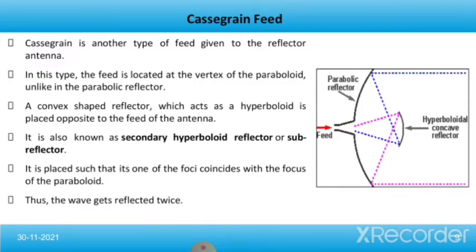Along with this, we have another type of feed called the Cassegrain feed. Cassegrain is another type of feed given to the reflector antenna. In this type, the feed is located at the vertex of the parabola, unlike in the standard parabolic reflector. A convex-shaped reflector, which acts as a secondary hyperboloid reflector or sub-reflector, is placed opposite to the feed of the antenna. It is placed such that one of its foci coincides with the focus of the parabola, and thus the wave gets reflected twice.